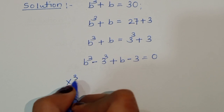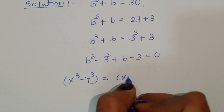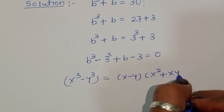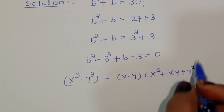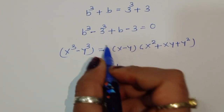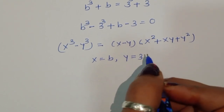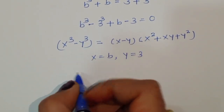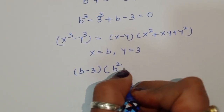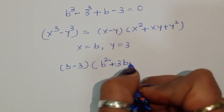Now b³ minus 3³ is in the form of x³ minus y³. The formula of x³ minus y³ is equal to (x minus y) times (x² plus xy plus y²). Using this formula here, suppose x is equal to b and y is equal to 3.